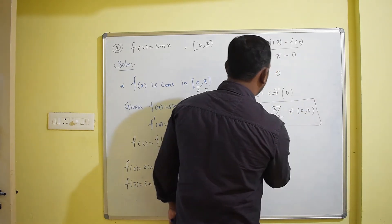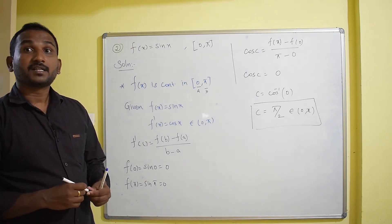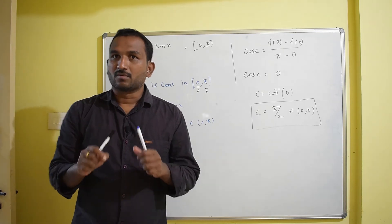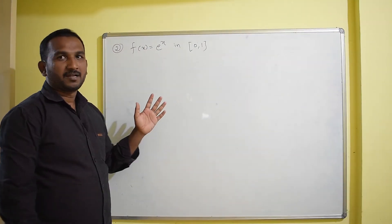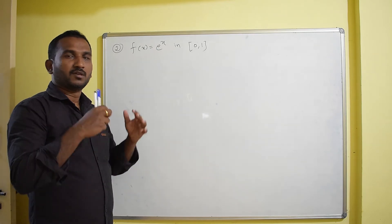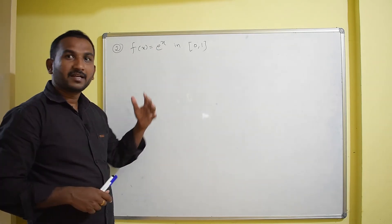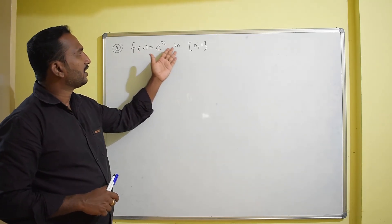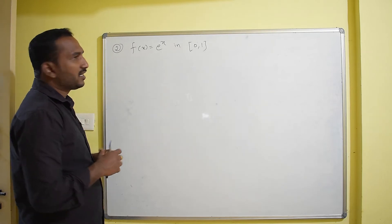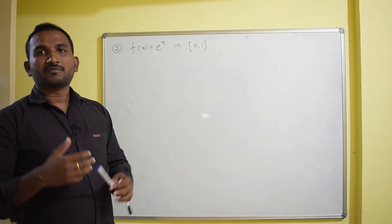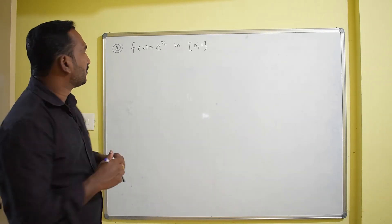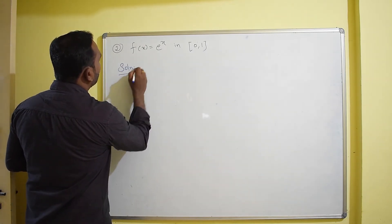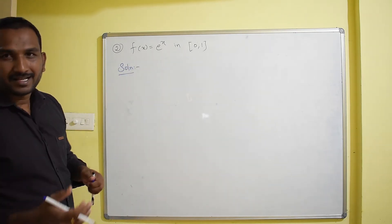Hence, Lagrange's mean value theorem is verified for f(x) = sin x in the interval [0, π]. Now the second problem: verify Lagrange's mean value theorem for the function f(x) = eˣ in the interval [0, 1]. We apply the same conditions as before.